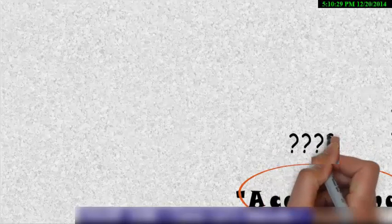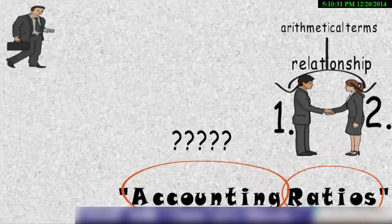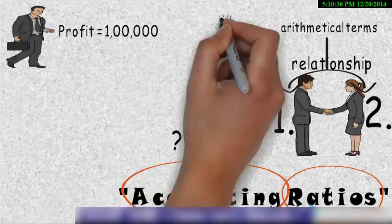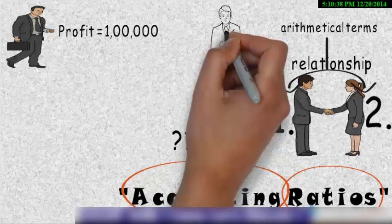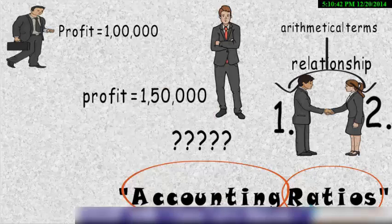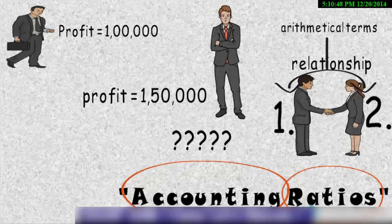But why we need to understand this ratio in accountancy? Suppose there are two companies and the manager of company ABC quotes a profit of one lakh and the manager of other company XYZ quotes a profit of one lakh fifty thousand. Now looking at this situation I might think that XYZ is comparatively better as compared to ABC because its profit is higher.